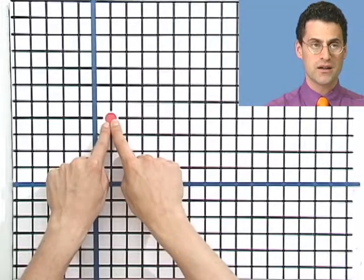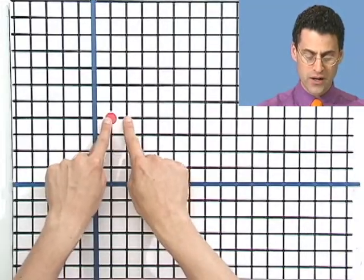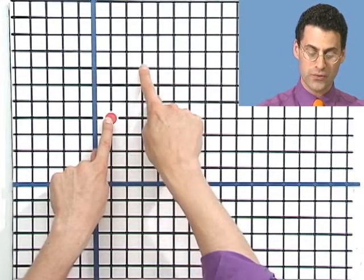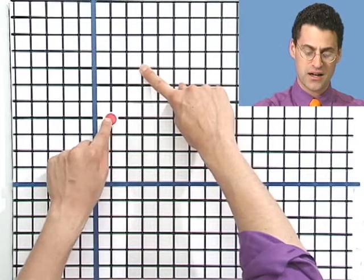So that means that for every two units I go in the x direction, I'm going to go three units in the y direction. Remember, rise, which is three, over run, which is two. So I'm going to go two over and three up, starting from this fixed point. So two over, one, two from that point, and three up, one, two, three. So that's another point on this line.